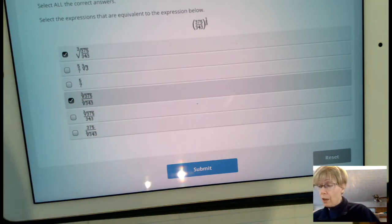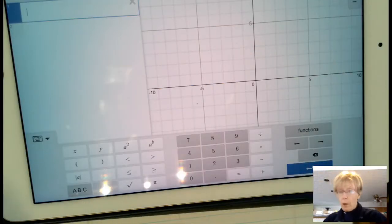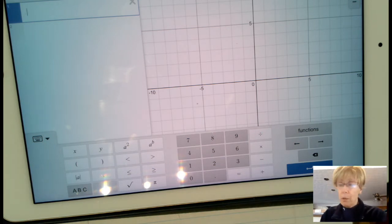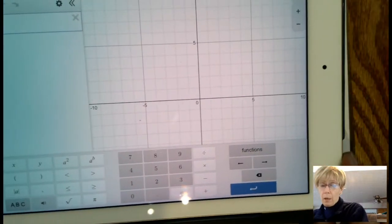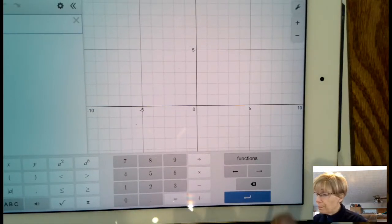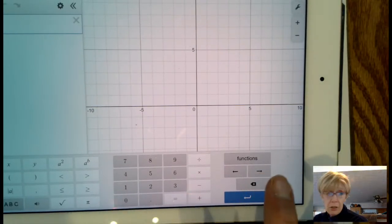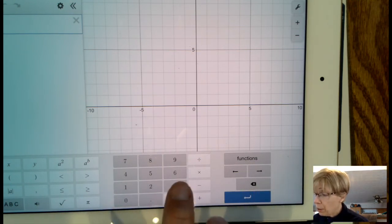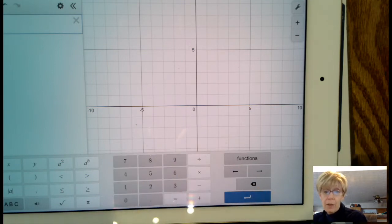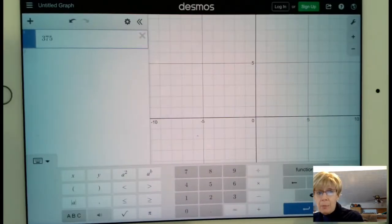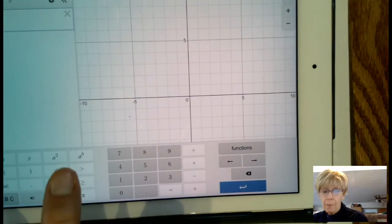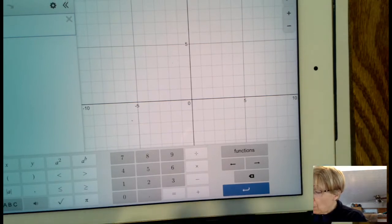I was practicing before. When we type this in, we can type in 375. I typed in 375 to the, so I'm going to go A to the B, and then 1 divided by 3. That gives us a long decimal. Then let's try 343 to the 1 divided by 3.